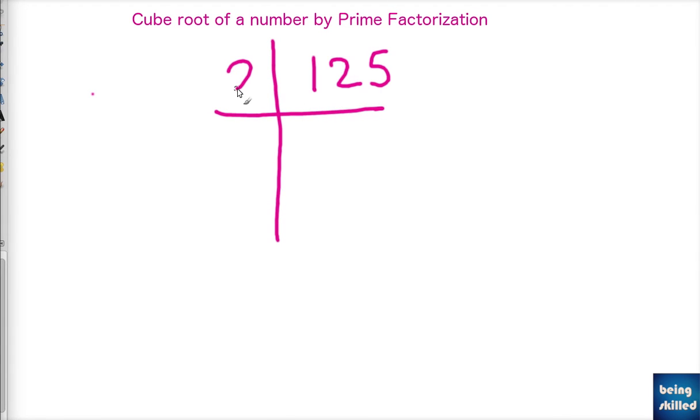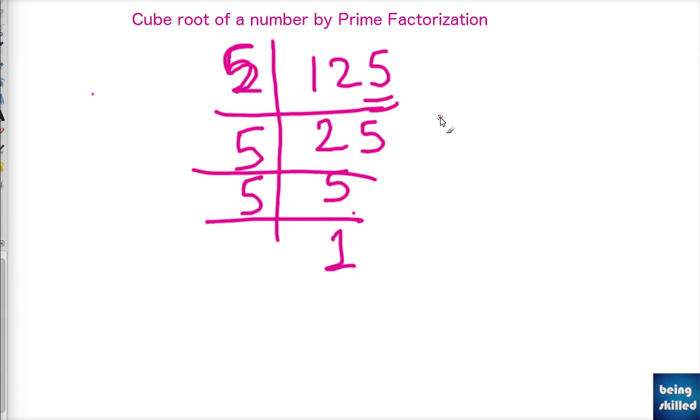So we cannot divide it by 2 since we have 5 in the last. So we will divide it by 5. Now we will get 25. We will divide it again by 5, then we get 5. Divided again by 5 and we will get 1.